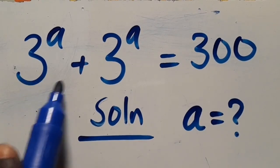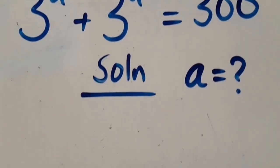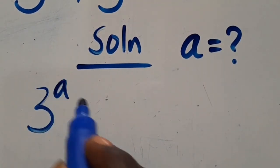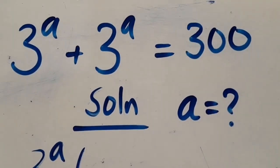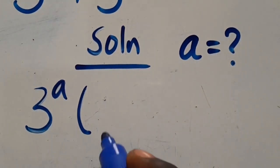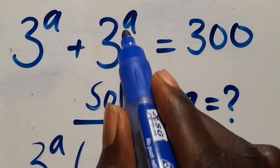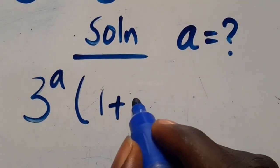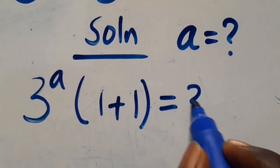Now, from here 3 to the power of a is common. Let's factor it out as 3 to the power of a, then open the bracket: 3 to the power of a divided by this 3 to the power of a here will be 1, plus this 3 to the power of a divided by this 3 to the power of a here will also be 1. We close the bracket, then equals 300.